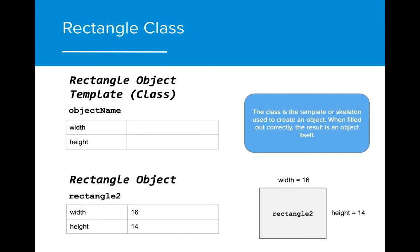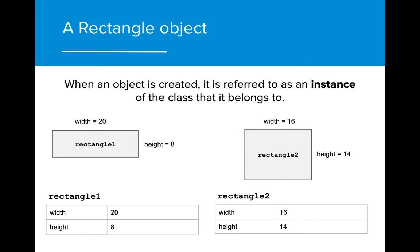We can think about the class as the unfilled template of an object, and the object itself as the filled version of the template. The skeleton or framework is the class containing the specifications, while the object is the actual implementation of that framework. Each rectangle that is created from the rectangle class has its own attributes and exists separately from the other rectangle objects.